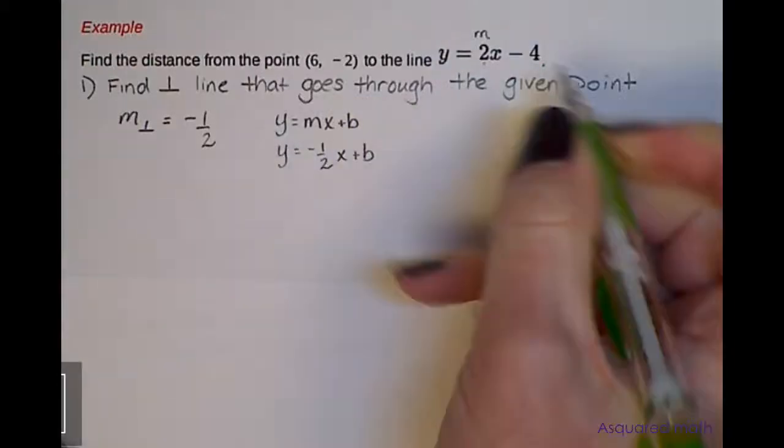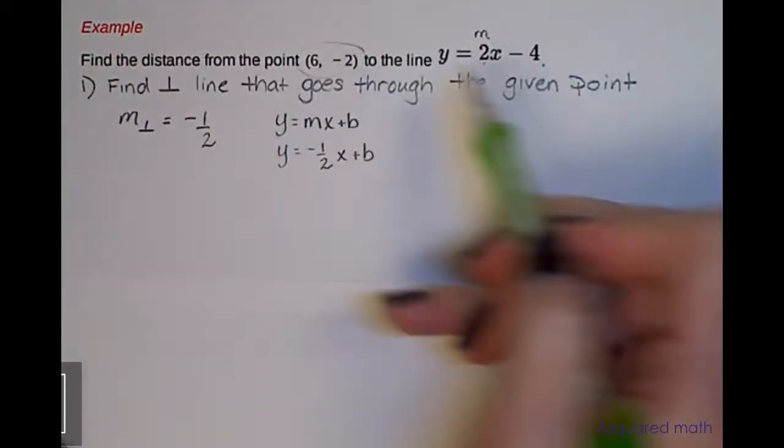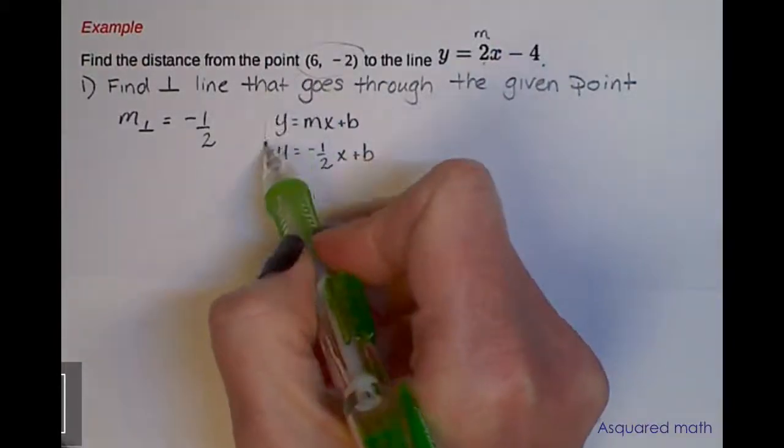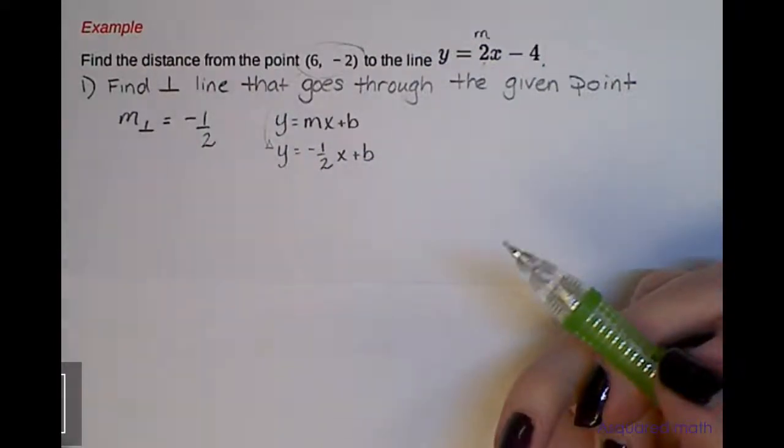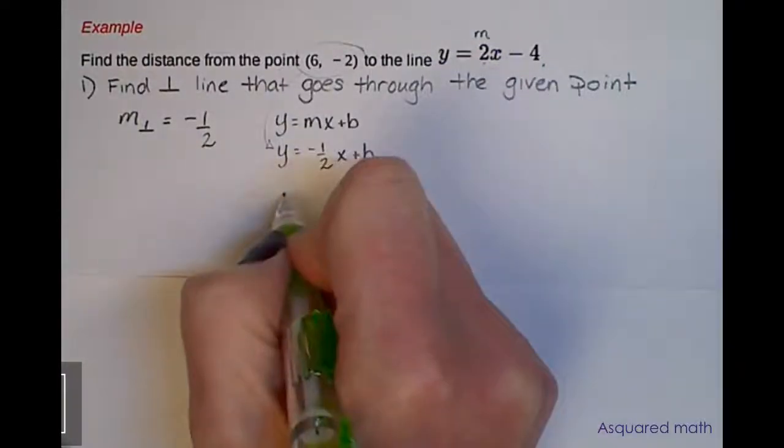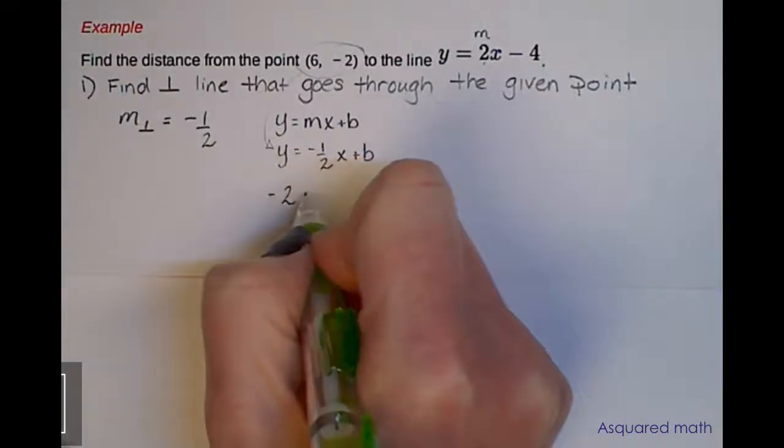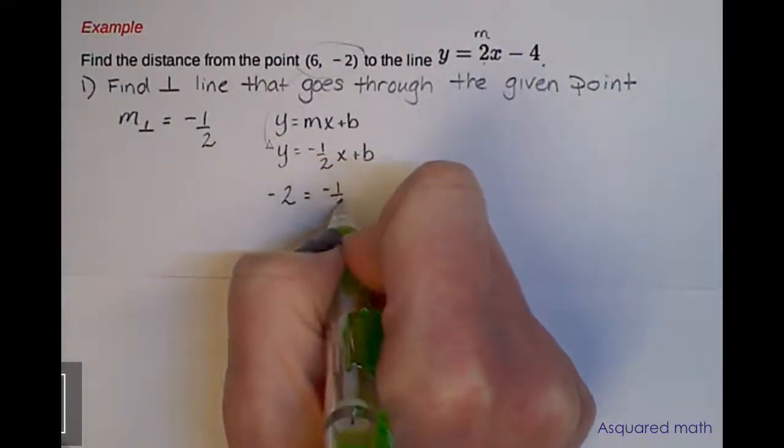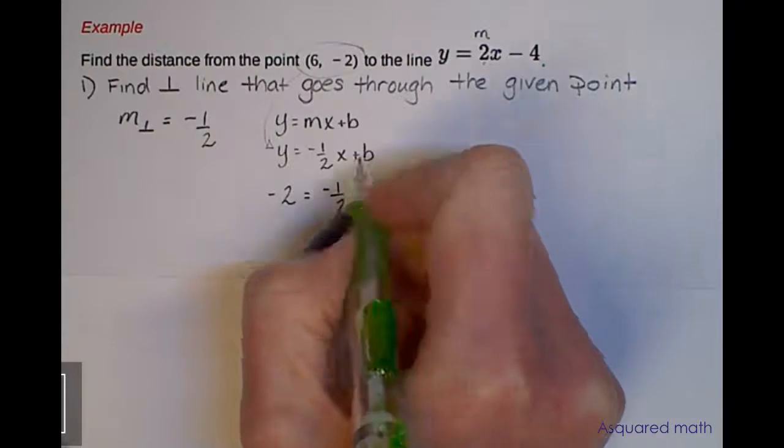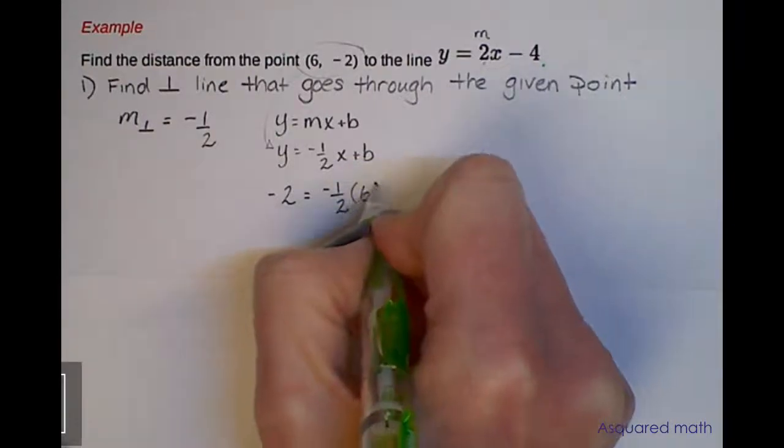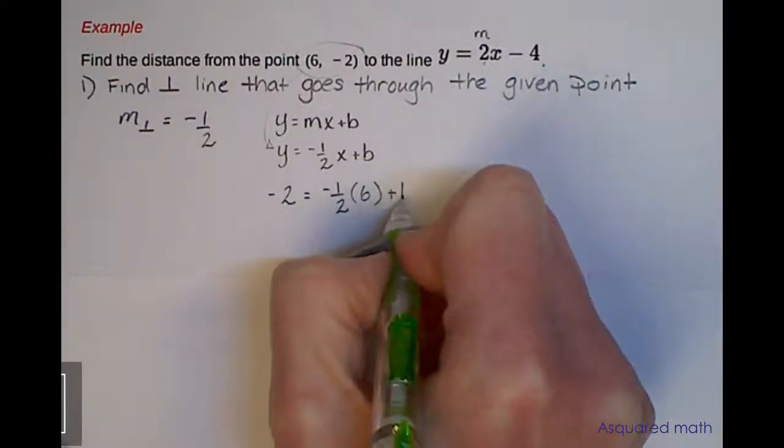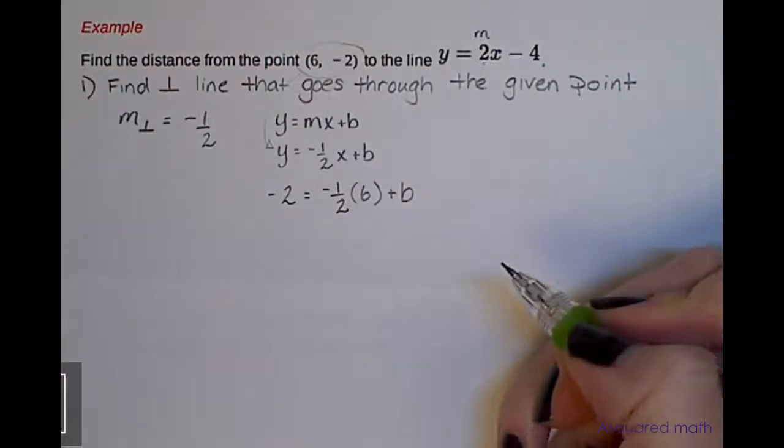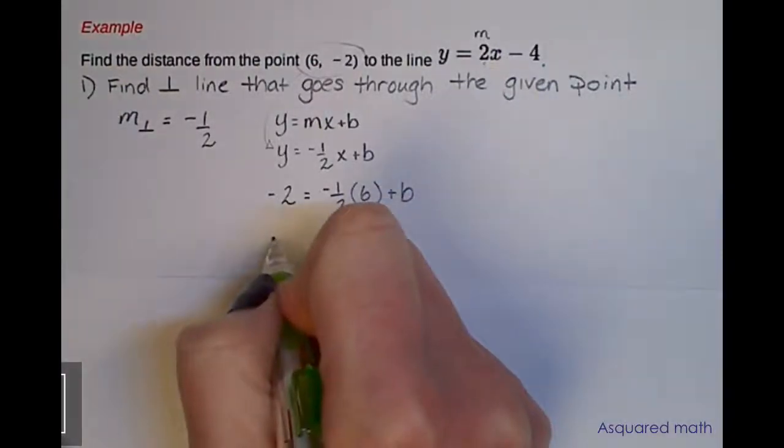We're going to take this point and plug those x and y values into our equation. So we end up with -2 = -1/2 times our x value of 6 plus b.